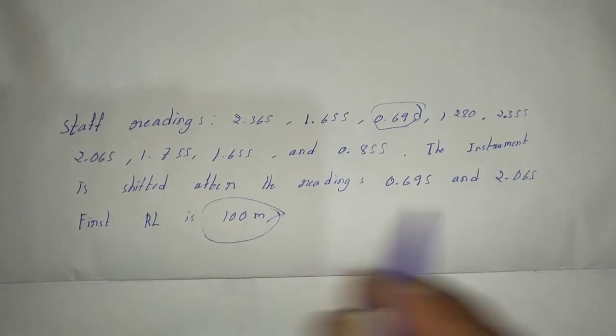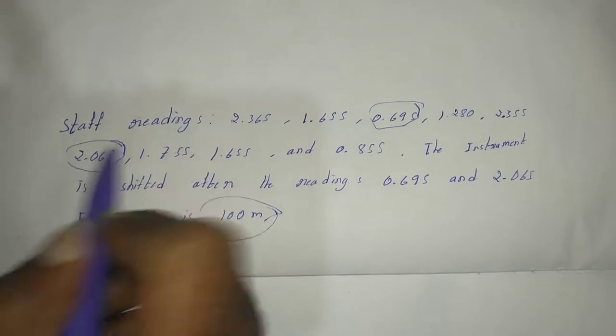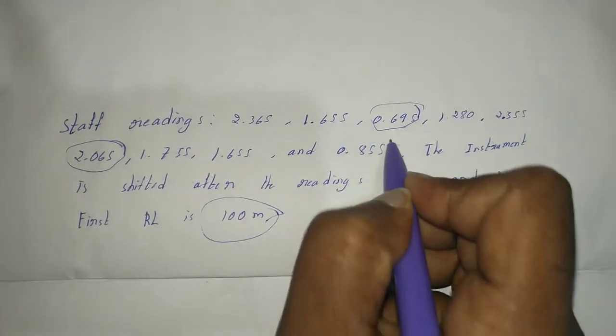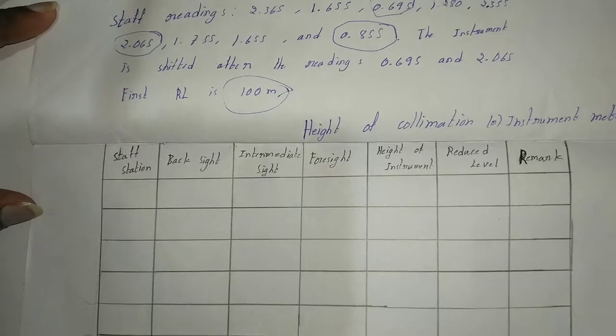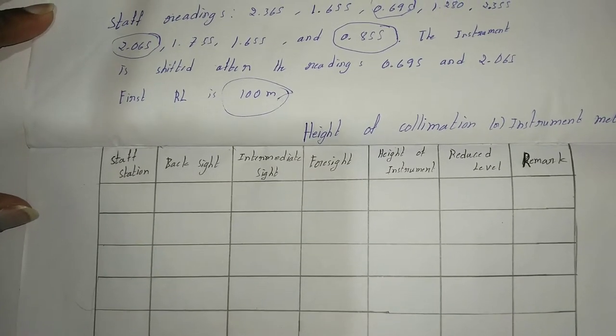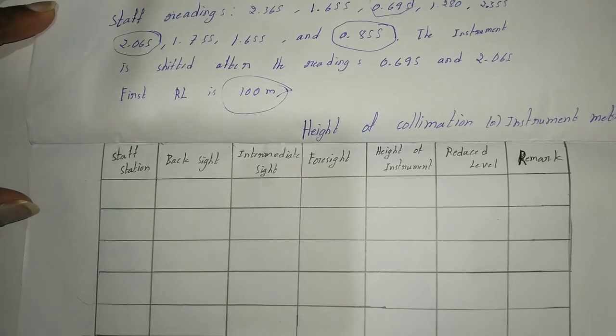First RL is 100 meters, and here is 0.695 and 2.065. These two are this and it is also this, three or four sides.